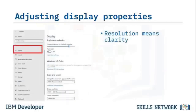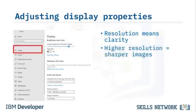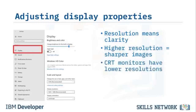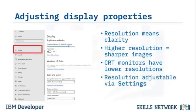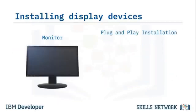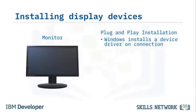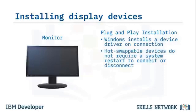Screen resolution refers to the clarity of text and images displayed on screen. At higher resolutions such as 1600x1200 pixels, items appear sharper. Older CRT monitors display lower resolutions of 800x600 or 1024x768 pixels. You can change your screen resolution by selecting Settings, then System, then Display. Windows uses plug-and-play installation, automatically locating and installing a device driver when you connect a device.